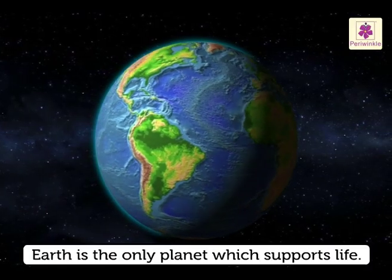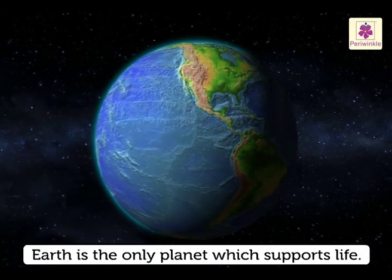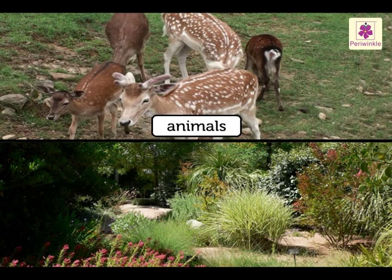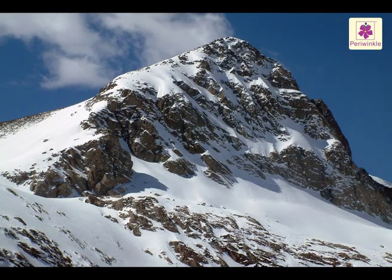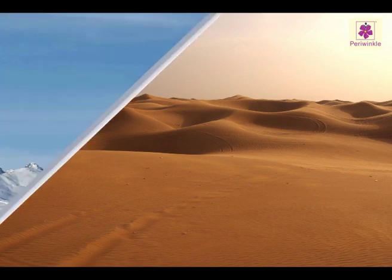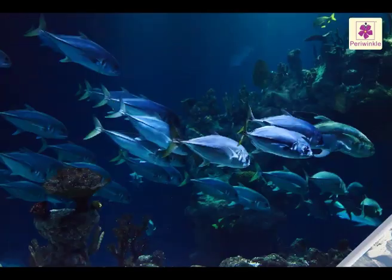It is the only planet in our solar system which supports life. Animals and plants live almost everywhere on the Earth's surface, from the frozen surface of the Arctic to the dry, hot sands of the Sahara Desert, from the high snowy mountain peaks to the deep oceans.